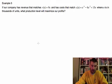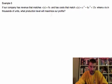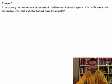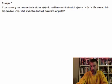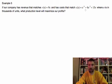Alright, our company, Bulldog Manufacturing Inc., has revenue that matches this equation right here, R(x) = 9x, and has costs that match this equation right here, where C(x) is equal to x cubed minus 6x squared plus 15x, where x is in thousands of units.